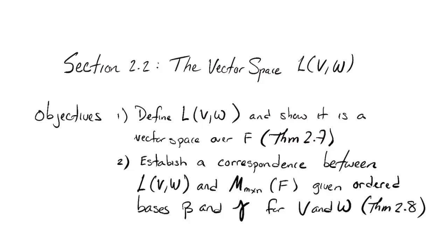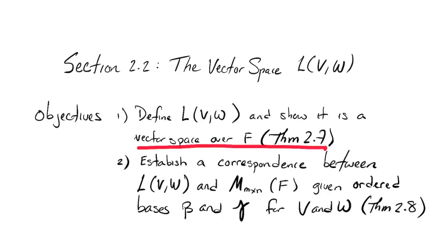Okay, welcome back to linear algebra. We're going to continue working in section 2.2. Last time we were looking at how, once you choose ordered bases for a vector space, every linear map naturally gives rise to a certain matrix — the matrix representation of that linear map. The contents of theorem 2.7 will address this.